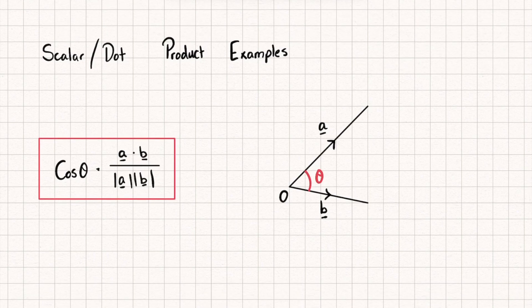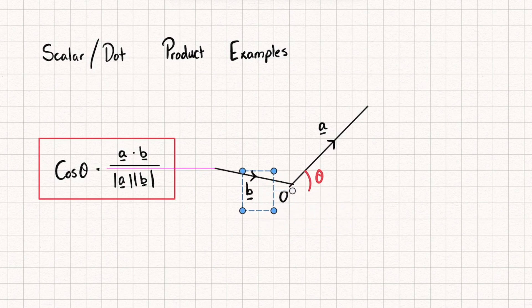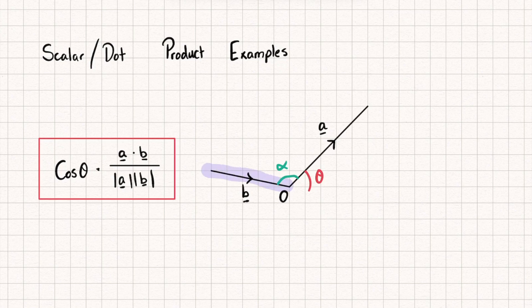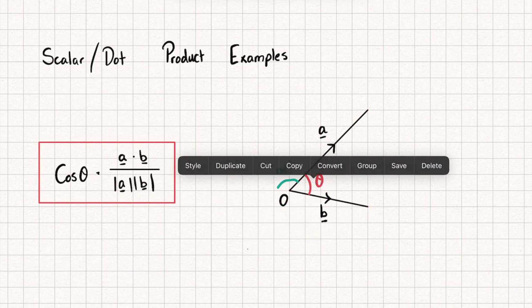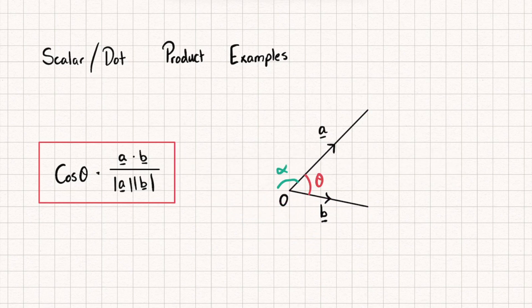A key thing to note is that this angle is the one measured where both vectors are pointing away from the same point. You can see they're both at the origin pointing away from it. If I moved vector b over here, there would be a new angle alpha, but then b would be pointing towards the origin and a pointing away — so that wouldn't work. The angle theta is the one measured when they're both pointing away from the same point.